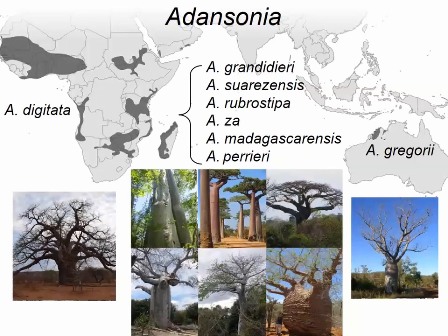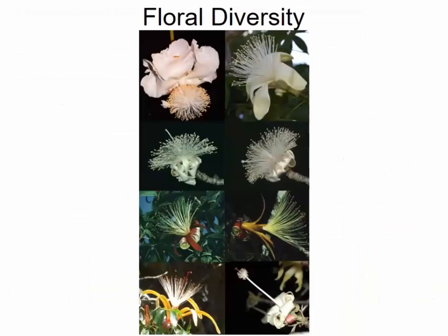Baobabs refer to the genus Adansonia. There are currently eight recognized species with a very interesting biogeographical pattern: one species, digitata, widespread across continental Africa; six species described in Madagascar; and one species in the remote northwest of Australia, called the boab rather than baobab. All species have incredible floral diversity. An individual tree flowers for about a month, producing hundreds of flowers at a given time.